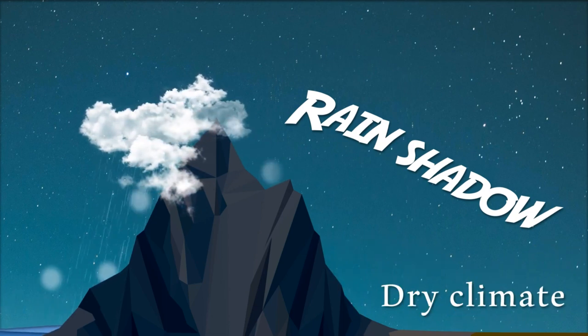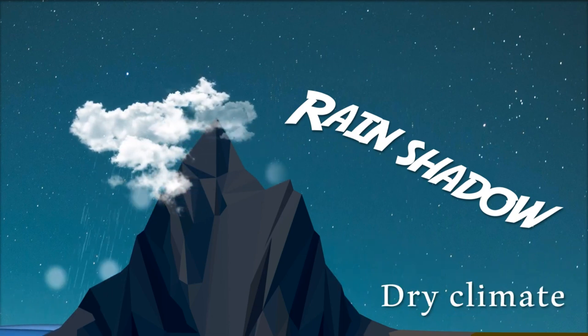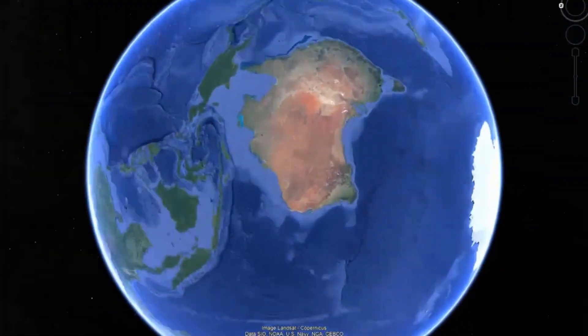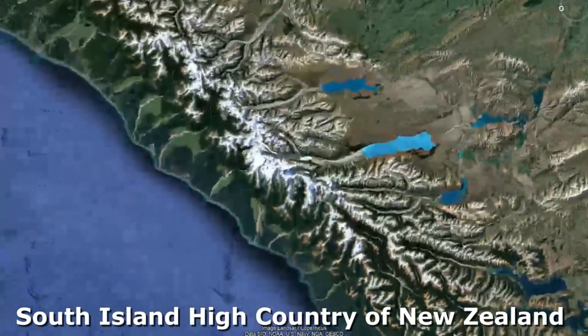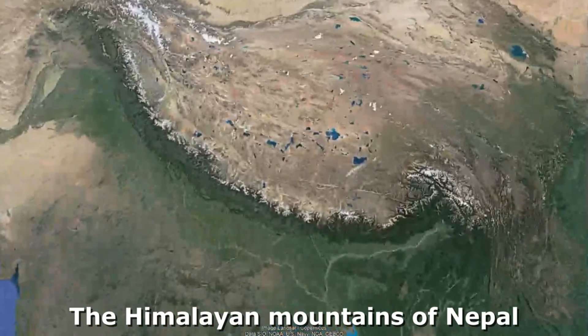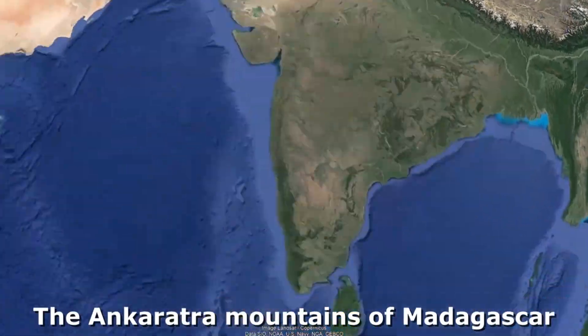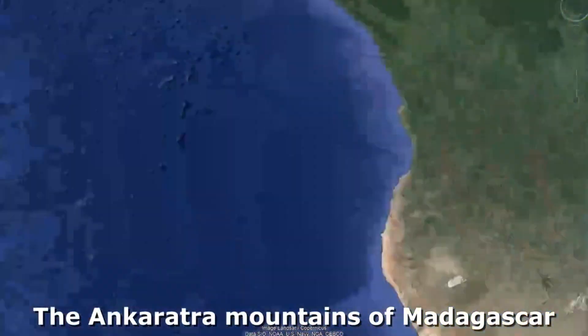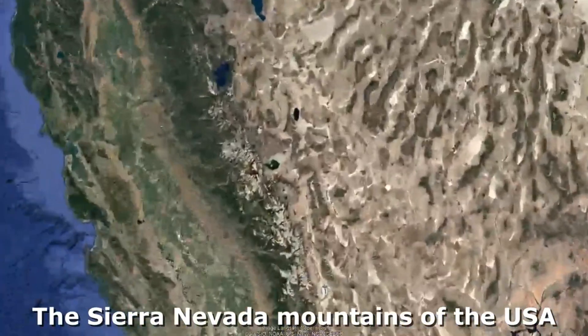This is why the windward side of a mountain range will be green and wet, and the leeward side will be brown and dry. You can see examples of this along the South Island High Country of New Zealand, the Himalayan Mountain Ranges of Nepal, the Ankaratara Mountains of Madagascar, and the Sierra Nevada Mountains of the United States.